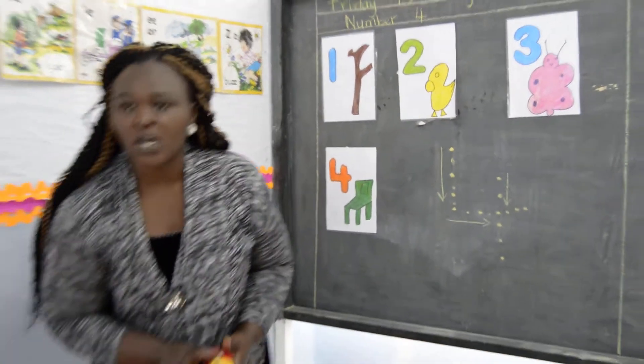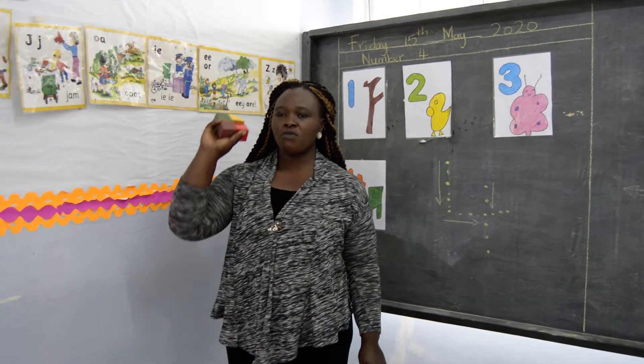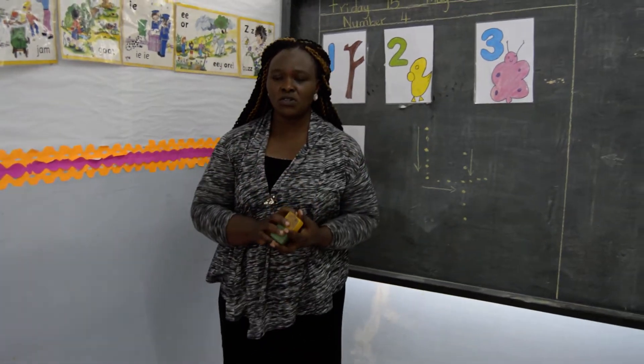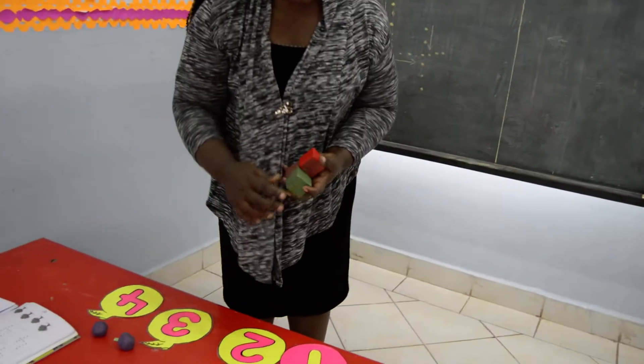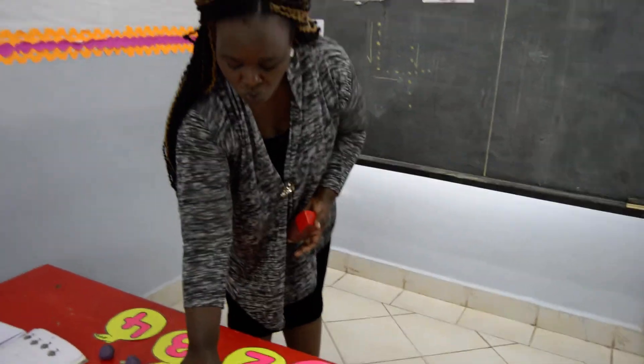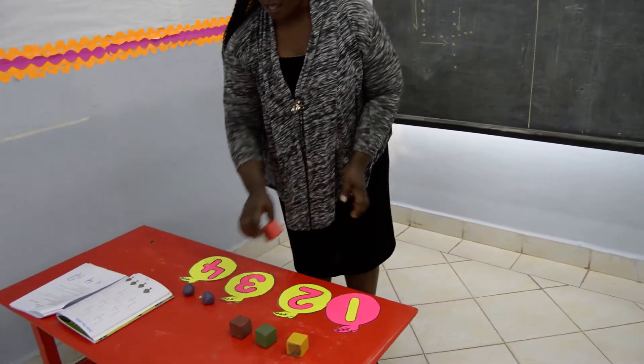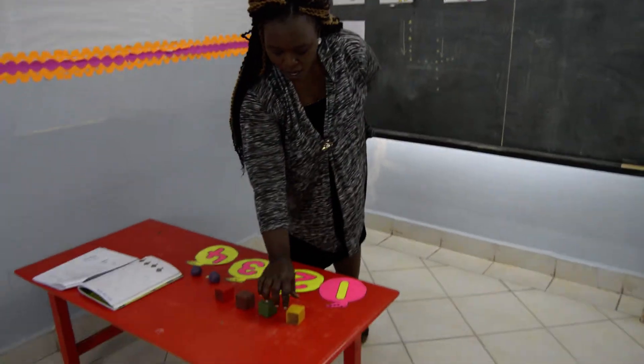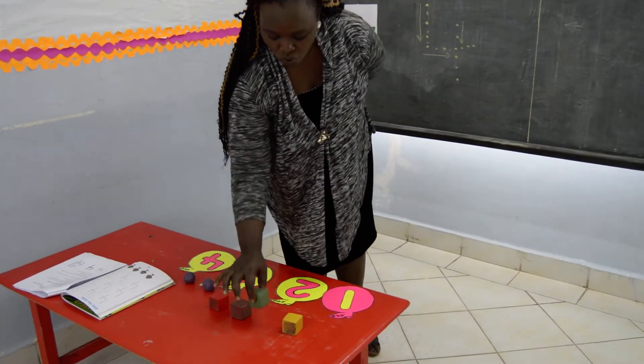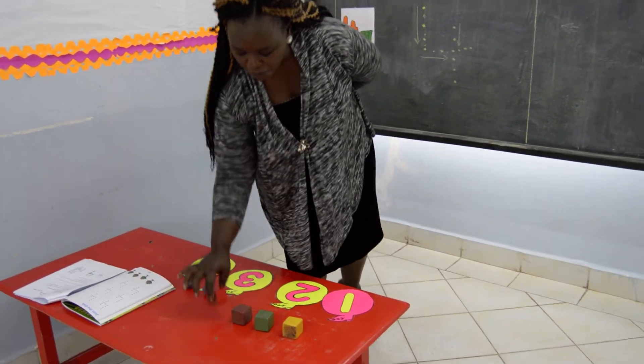We are also going to count our blocks up to number four. Can we count together, children? One. Two. Three. Four. Can we count again? One. Two. Three. Four.